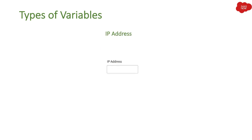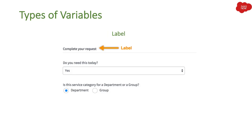Then we have IP Address. If you want users to fill in an IP address for a router or network, they can enter their IP address using this variable. Then we have Label, which is similar to Break in that it adds a line, but unlike Break, Label also includes a name. For example, it might say 'Complete Your Request' with a long line displayed below it.